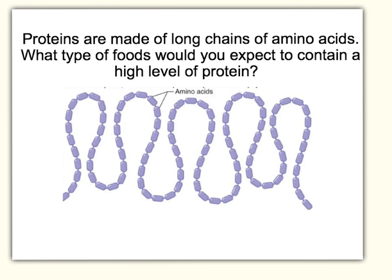This slide is a quick recap on protein structure. We've built proteins out of amino acids. We need to briefly remember what foods have a high level of protein: meat, fish, eggs, nuts, seeds, and things called pulses — like beans, lentils, and chickpeas.